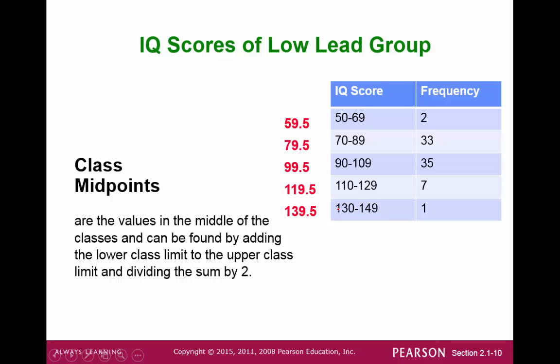The class midpoints are the numbers that are falling between an upper and a lower class limit, and we would find that by simply finding the average. So for the first class, if we have 50 and 69 and then we find the average between those two, we would get 59.5, which is the class midpoint. The class midpoints are also sometimes called class representatives.